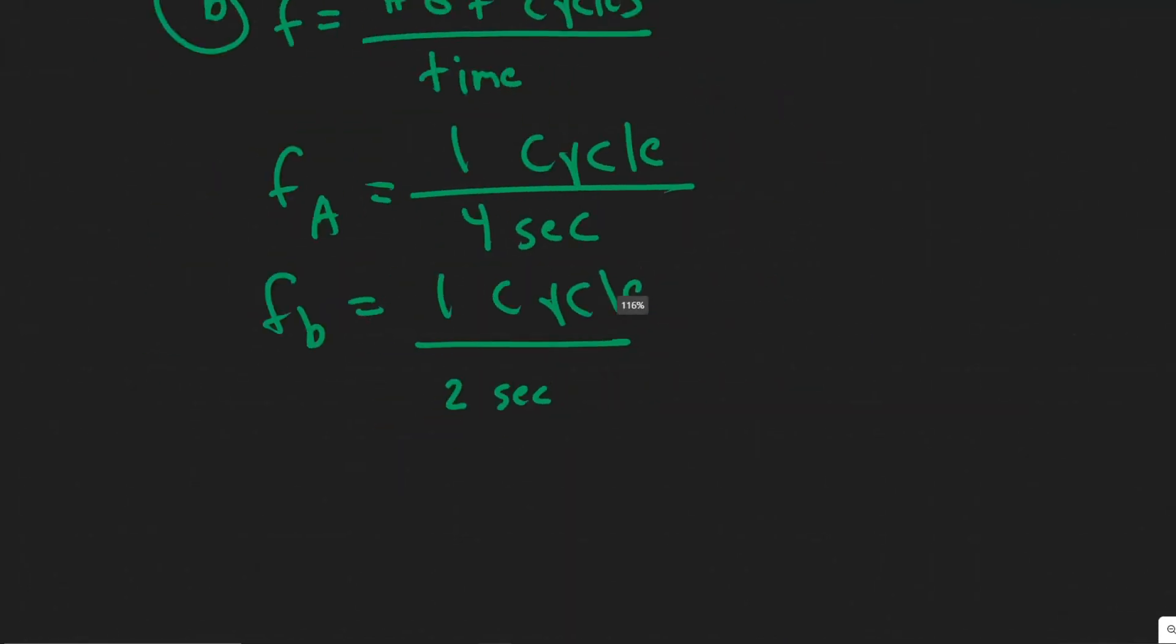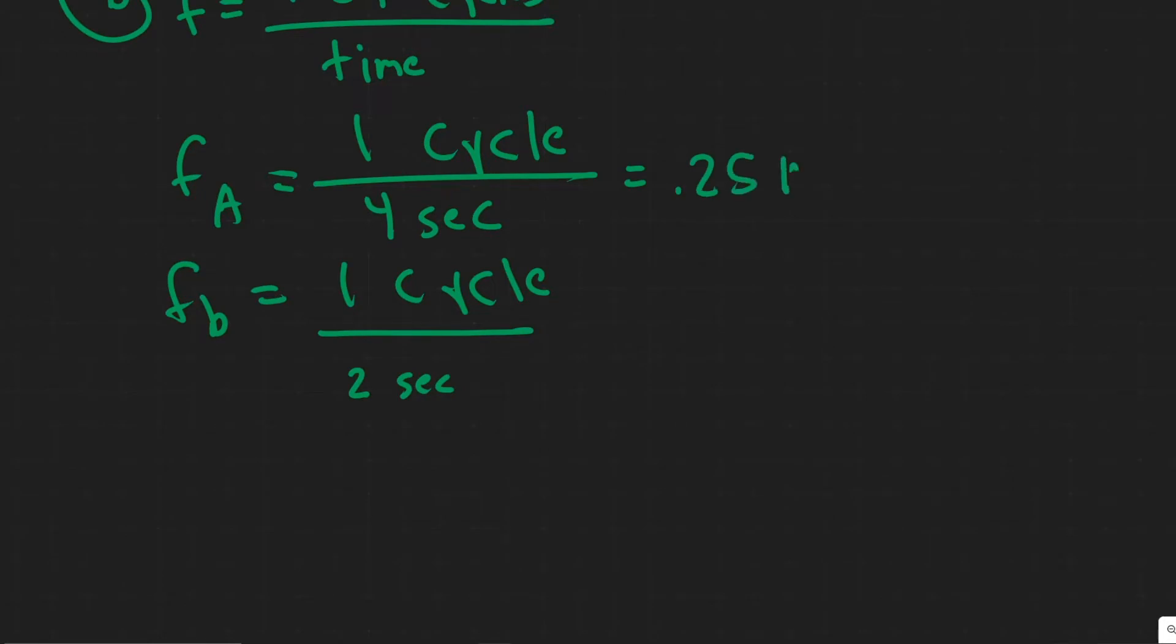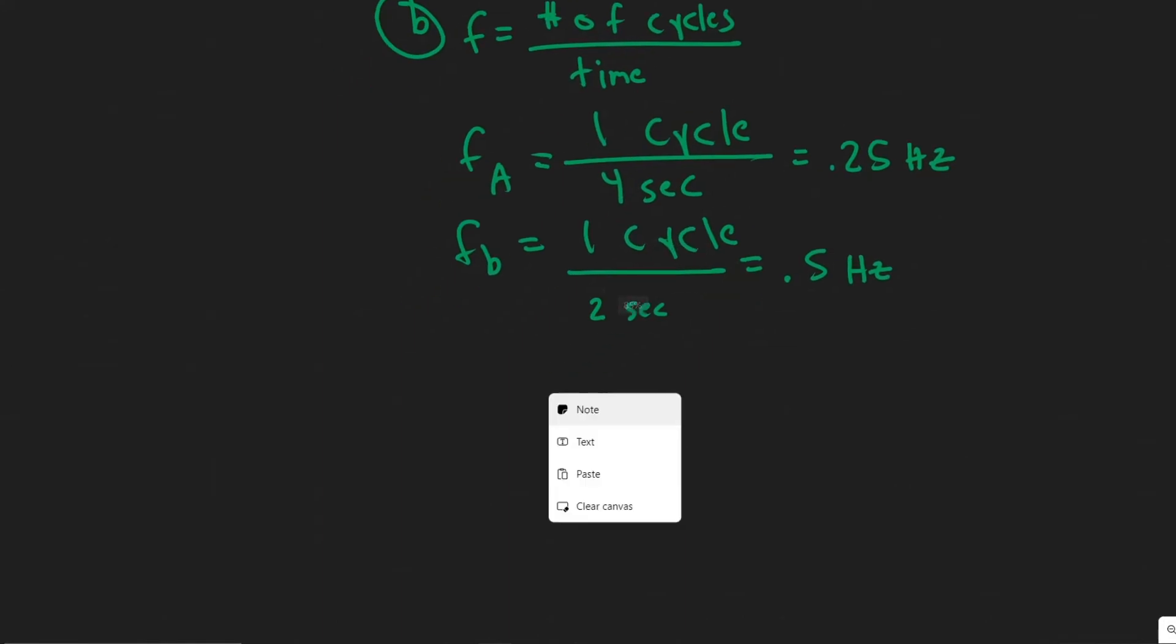So this one is one over four, which is 0.25. The units of frequency are hertz, which are basically just inverse seconds. And this one is 1 divided by 2 is 0.5. So 0.5 hertz and 0.25 hertz, those are your answers for the frequency.